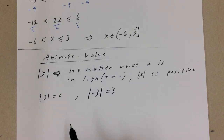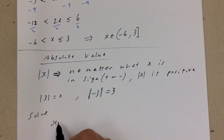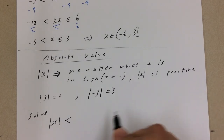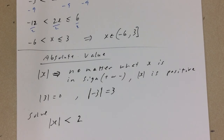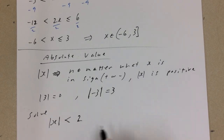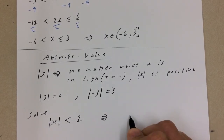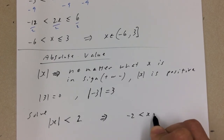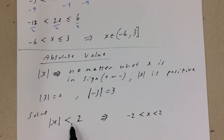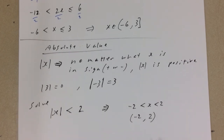If the absolute value of x is less than 2, we need to look at both positive and negative numbers whose absolute value is less than 2. That implies negative 2 is less than x which is less than 2. If you take the absolute value of negative numbers greater than negative 2, you get something less than positive 2. In interval notation, that's (negative 2, 2).